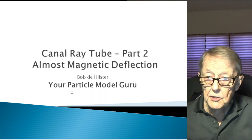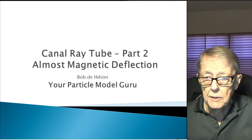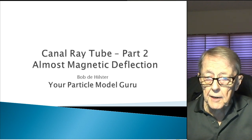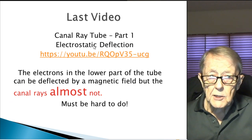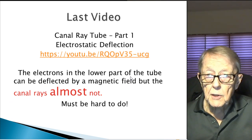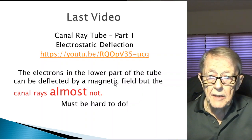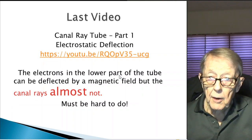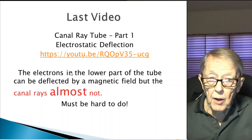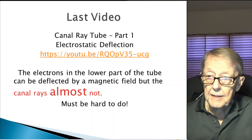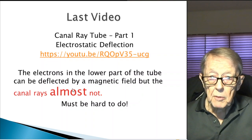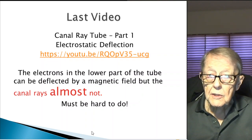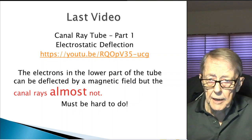That intrigued me that they would say it that way. Others said it would happen, but we're going to look at it today. In my last video, this is what I was referring to: the electrons in the lower part of the tube can be deflected by a magnetic field, but the canal rays almost not. That's the cathode ray that can be deflected, but the canal rays almost not. It must be a difficult thing to do.